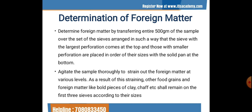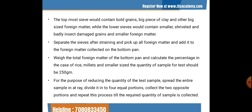Agitate the sample thoroughly to strain out foreign matter at various levels. As a result of straining, other food grains and foreign matters like bold pieces of clay, shaft, etc., shall remain on the first three sieves according to their sizes. The topmost sieve contains bold grain, big pieces of clay and large foreign matter, while lower sieves contain smaller, shriveled, insect-damaged grains and smaller foreign matters. Separate the sieves after straining, pick up all foreign matters and add them to the foreign matter collected on the bottom pan.